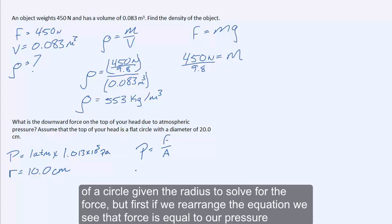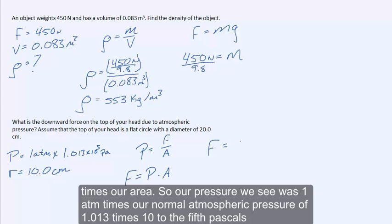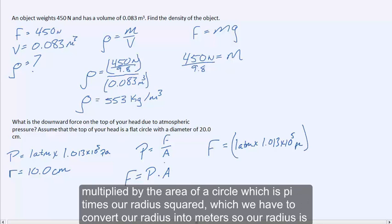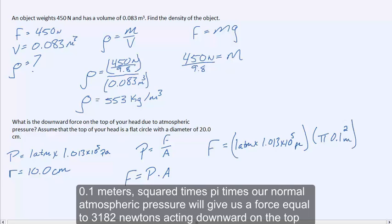Rearranging the equation, force equals pressure times area. Our pressure is 1.013 × 10⁵ pascals, multiplied by the area of a circle, which is π times the radius squared. Converting the radius to meters gives 0.1 meters, so the area is π × (0.1)² meters squared. This gives a force equal to 3,182 newtons acting downward on the top of your head.